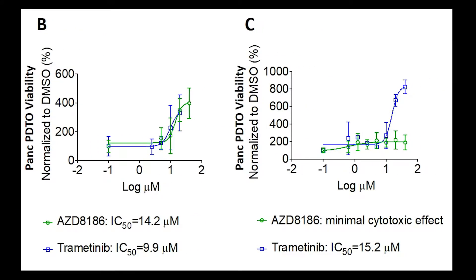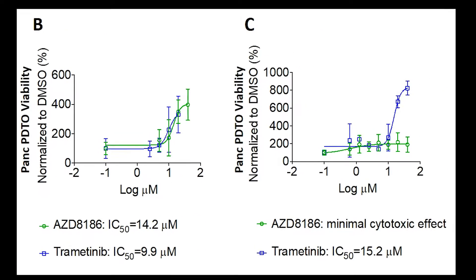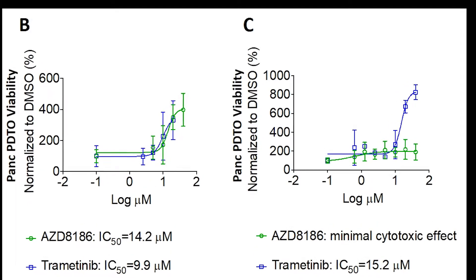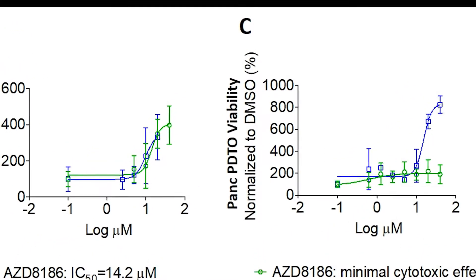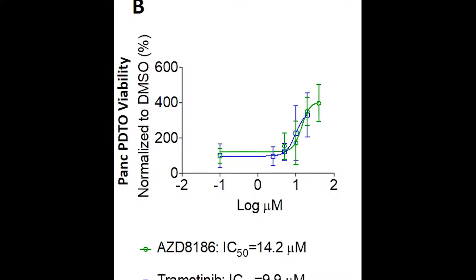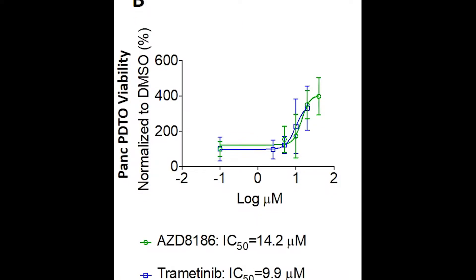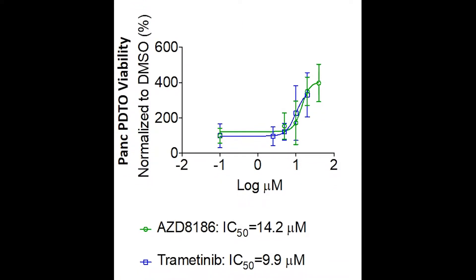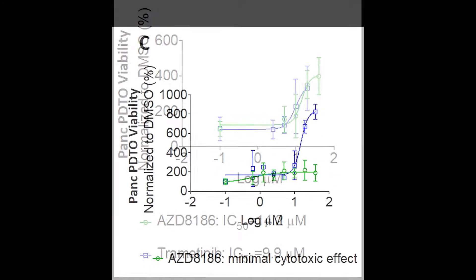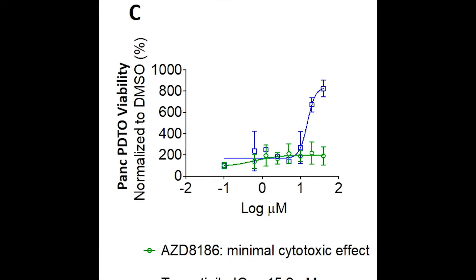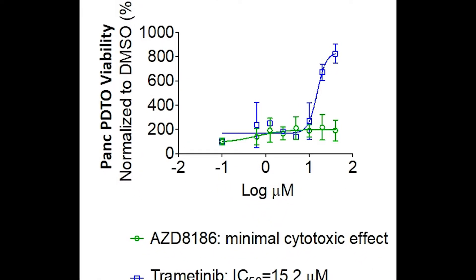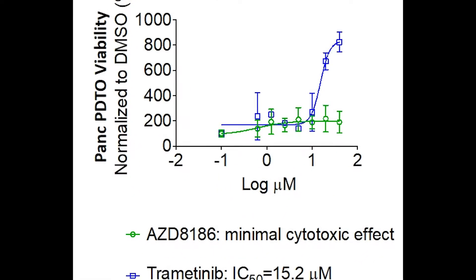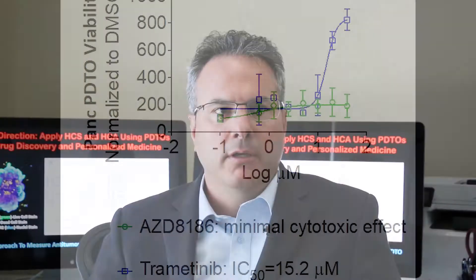Both patients had the same type of cancer; however, each patient-derived tumor responded differently to clinically relevant drugs. In panel B, that patient's tumor responded to both drugs. However, in panel C, one of the drugs — that particular patient's tumor organoids displayed drug resistance against that AZD compound.